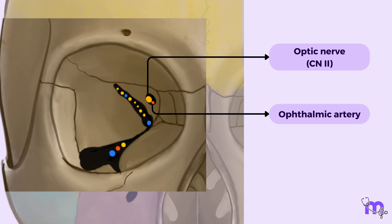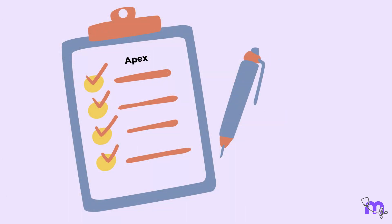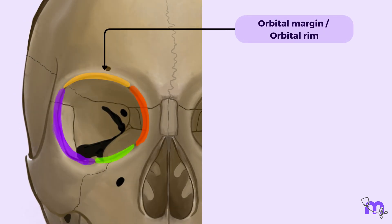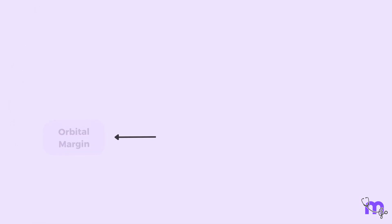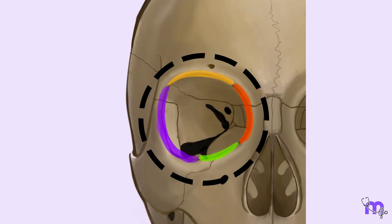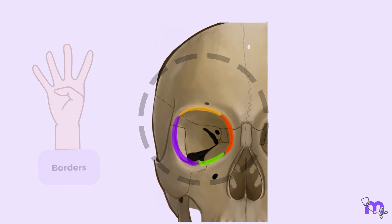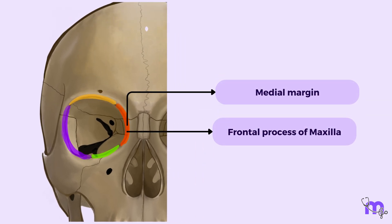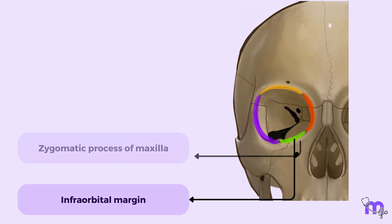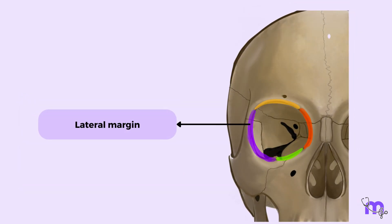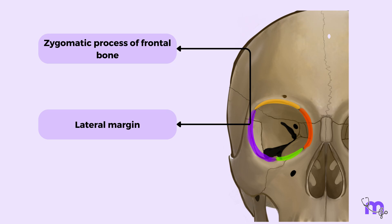The next boundary opposite the apex is the base, also known as the orbital margin or orbital rim — a sturdy framework that protects its precious contents. It also serves as the site for attachment of the orbital septum. The orbital margin has four borders: the supraorbital margin by the frontal bone, the medial margin by the frontal process of the maxilla, the infraorbital margin by the zygomatic process of the maxilla and the zygomatic bone, and the lateral margin by the zygomatic process of the frontal bone and the zygomatic bone.